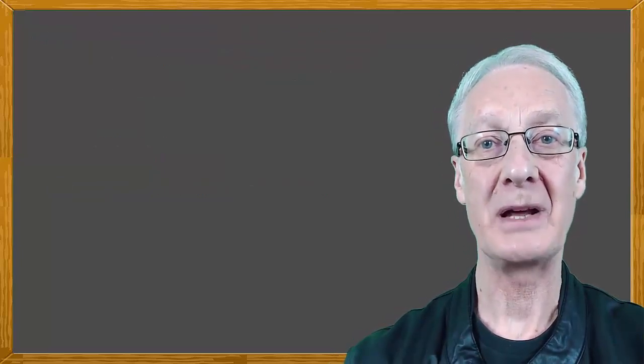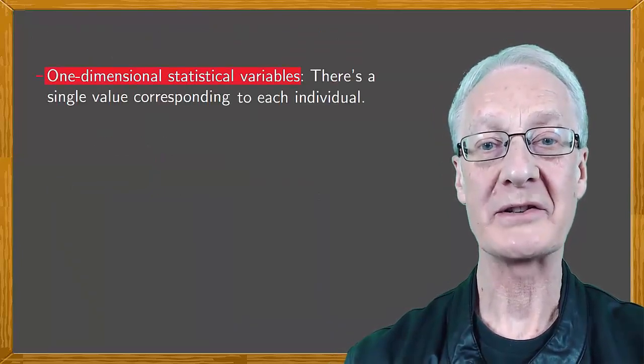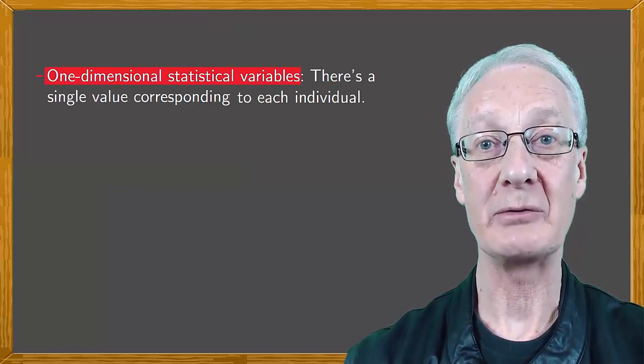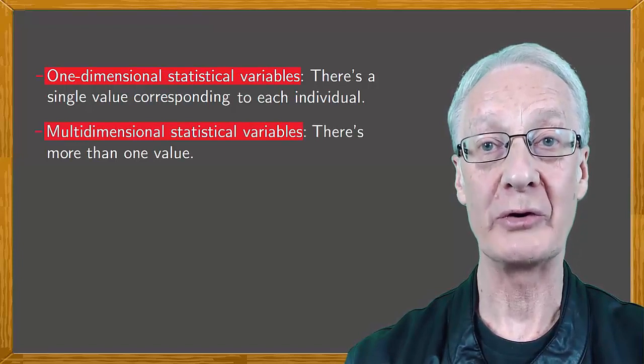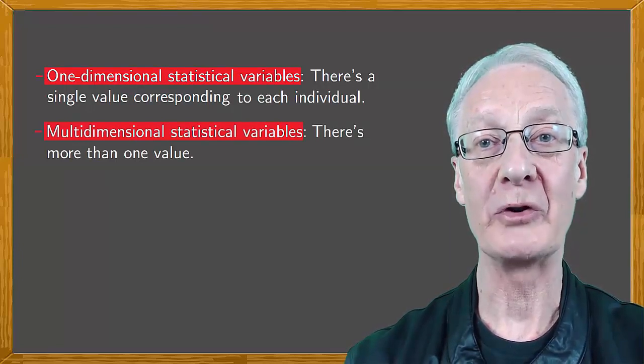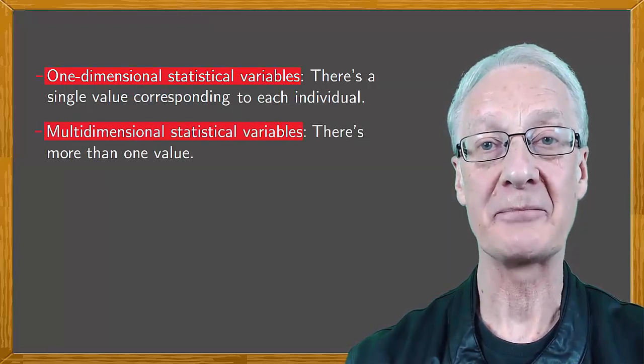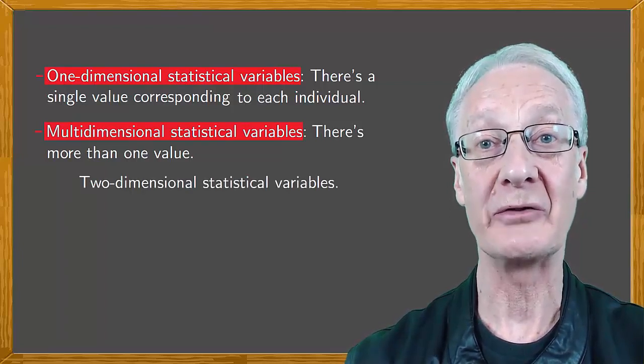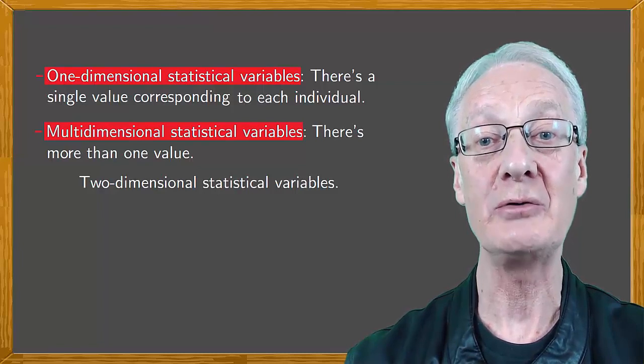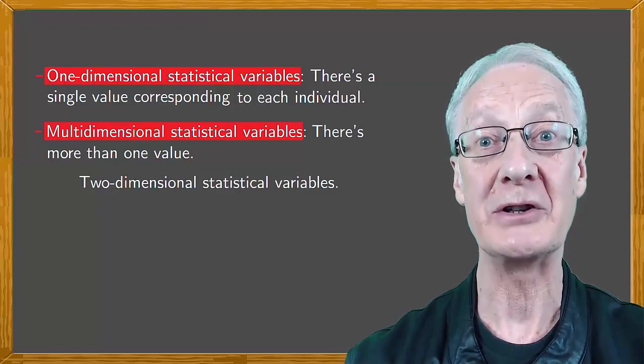Statistical variables may be one-dimensional, where there's a single value corresponding to each individual, or multi-dimensional, where there's more than one value, so that more than one aspect is being studied. In the case of two-dimensional statistics, we're dealing with two statistical variables and collecting two different values for each individual.